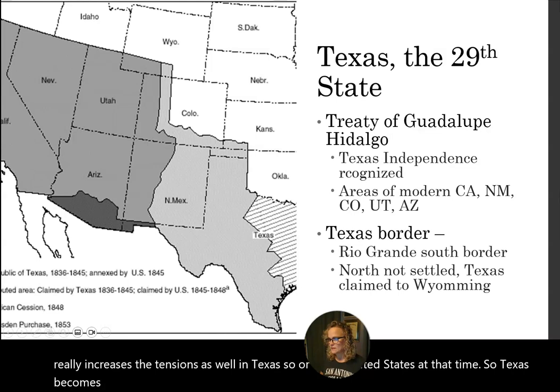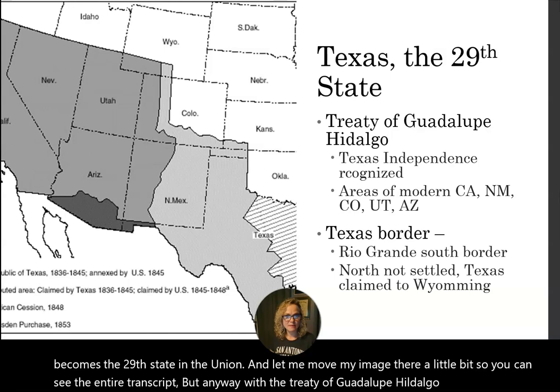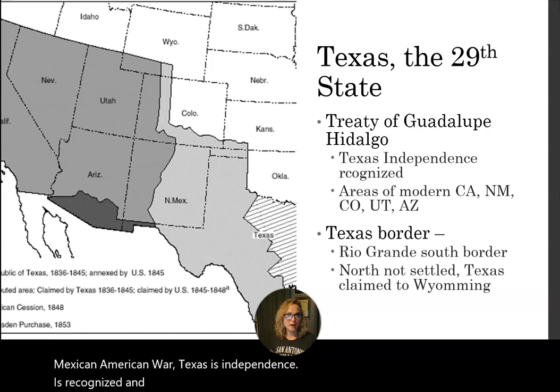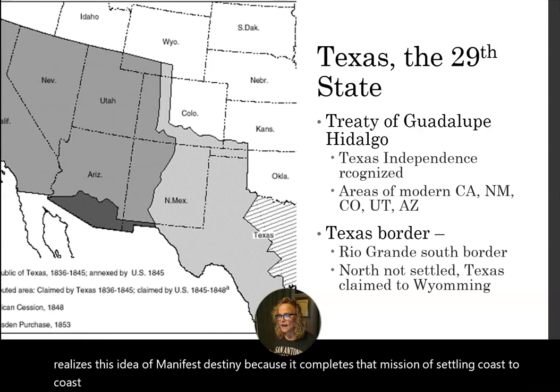Texas becomes the 29th state in the Union. With the Treaty of Guadalupe Hidalgo, which ends the Mexican-American War, Texas's independence is recognized and the United States grows by about a third. It realizes this idea of manifest destiny because it completes that mission of settling coast to coast.